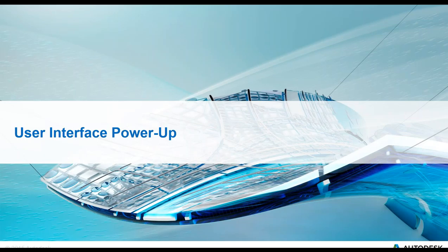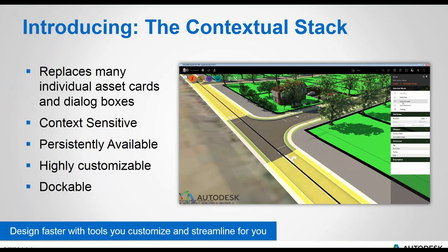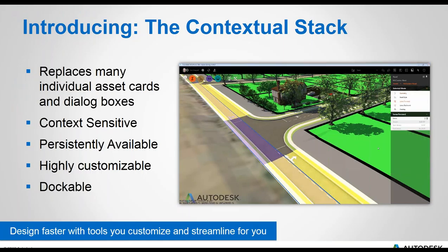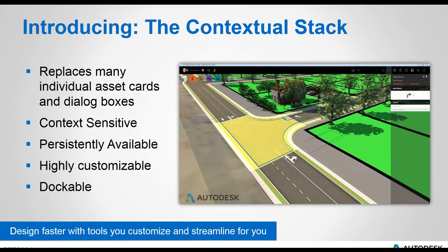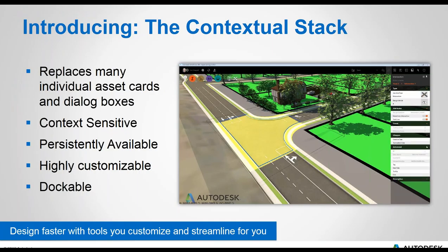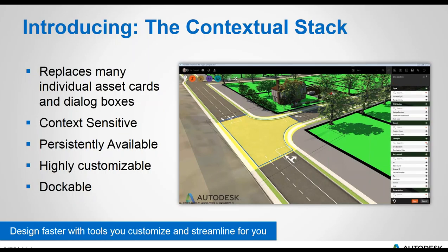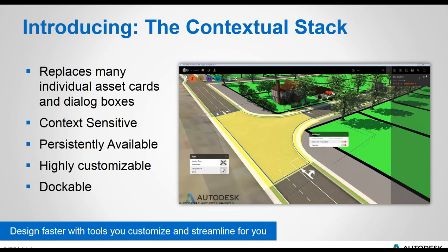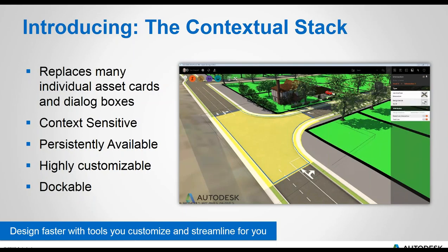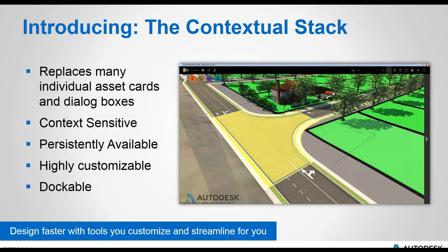Now let's look at user interface improvements. These are major changes — we're introducing the contextual stack. The panel appears on the right of your screen by default and replaces many of the individual asset cards and dialogue boxes used to modify information in your model, combining them into one user interface. It's context sensitive and responds to what you select in the model. You can make it persistently available so you don't have to keep opening and closing asset cards. It's also highly customizable and dockable — you can control what properties and groups are visible for specific object types.